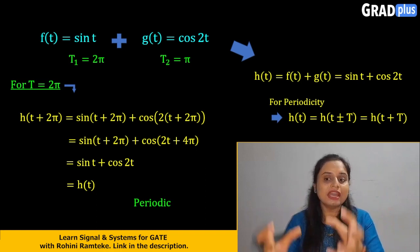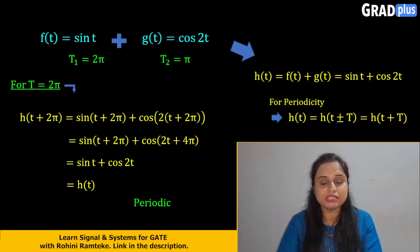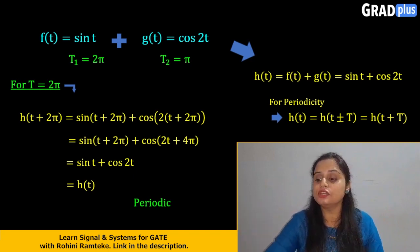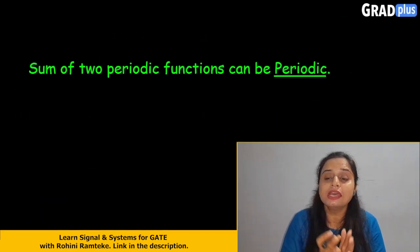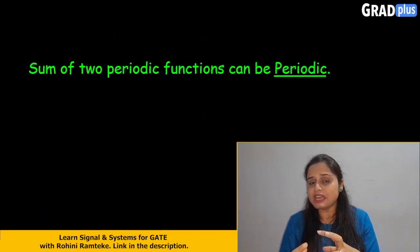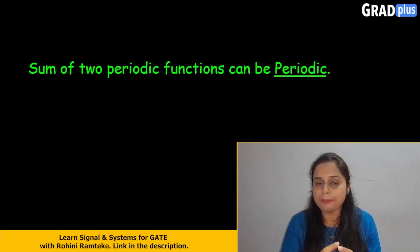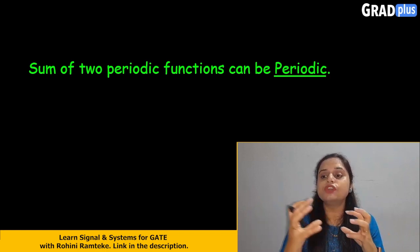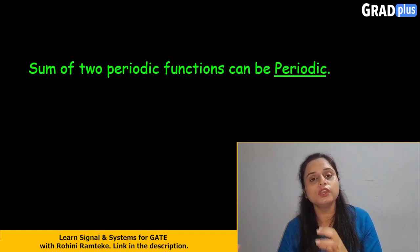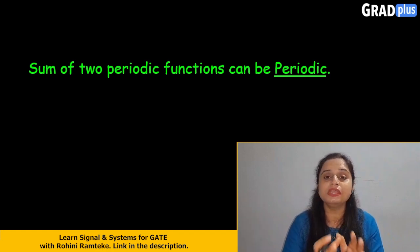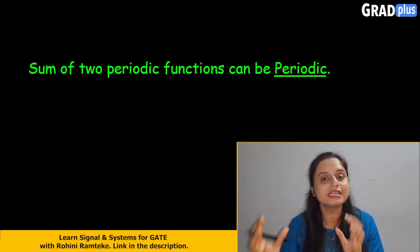So we can say that the addition of these two periodic signals comes out as a periodic signal. Sometimes this may not happen, but mostly the sum of two periodic functions or two periodic signals will also be a periodic signal.